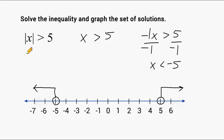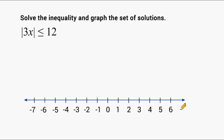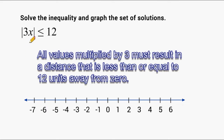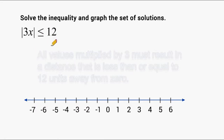Let's try another example. We have the inequality: the absolute value of 3 times x is less than or equal to 12. What this inequality is really saying is that 3 times x is less than or equal to 12 units away from 0. We're trying to determine what values of x, when multiplied by 3, result in a distance less than or equal to 12 units from 0. We know that 12 units away from 0 can be 12 above 0 or 12 below 0.